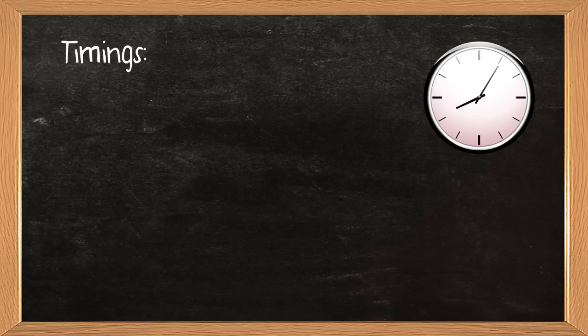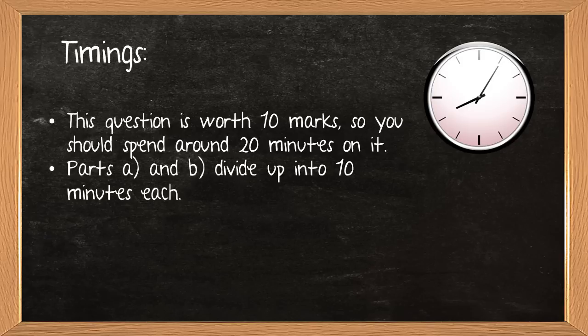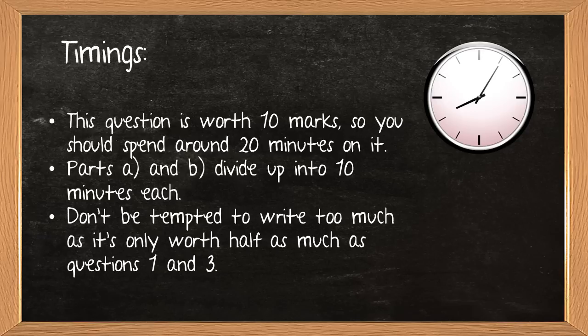First really important thing to think about, just like for question 1, is the timing. So it's worth 10 marks, question 2. Using the 2 minutes per mark rule, you should spend about 20 minutes on it. There are two parts, A and B, so it divides up nicely into 10 minutes per section and you can keep a good close eye on your timing and make sure you're not running over.